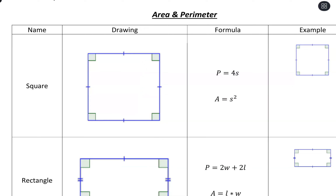Our first shape is a square, which has all equal sides. If we want the perimeter, we just take four times the side length — it's like adding S plus S plus S plus S, which is just four times S. And then for area, you take S times S, which is S squared.